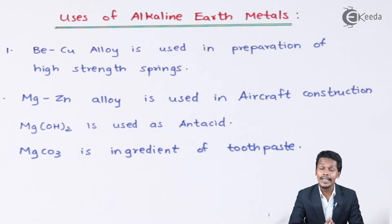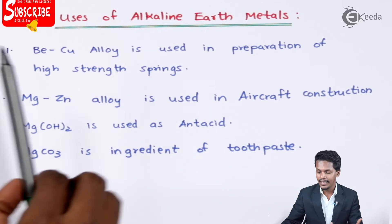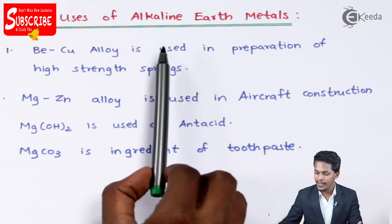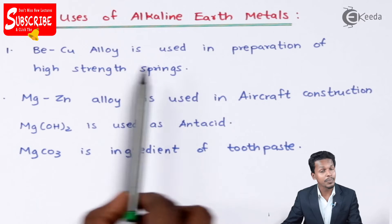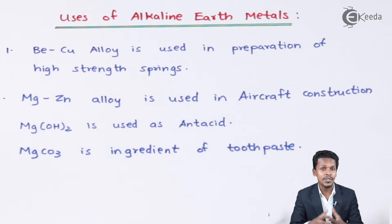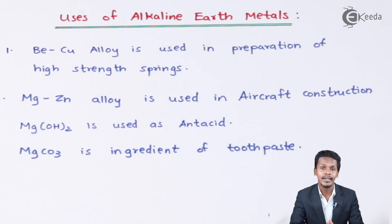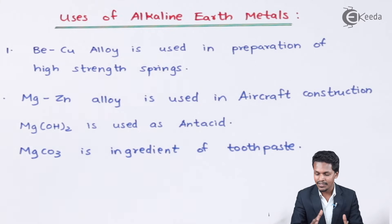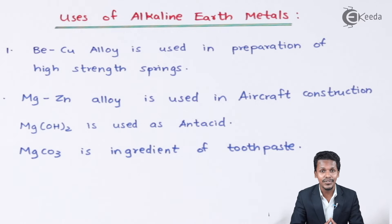Let us discuss a few uses of alkaline earth metals. Starting with the first point: the beryllium-copper alloy is used in the preparation of high-strength springs needed in various machines, where high-strength springs are required to lift heavy objects. This is one of the key advantages of beryllium as an alkaline earth metal.